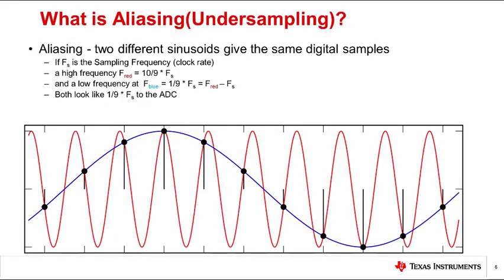What is aliasing or undersampling? The term aliasing means false name. Aliasing occurs when Nyquist criteria is not met and f in is greater than fs over 2 and it becomes impossible to distinguish a low frequency signal from a high frequency signal.